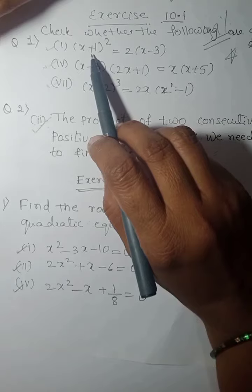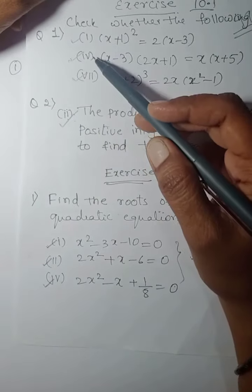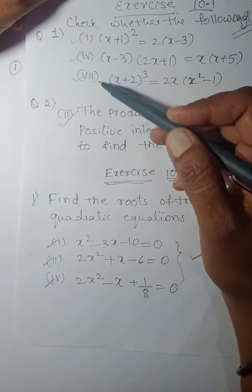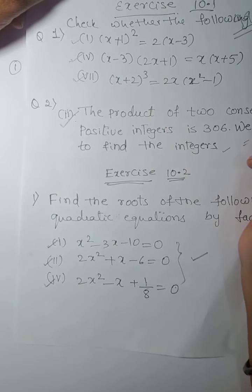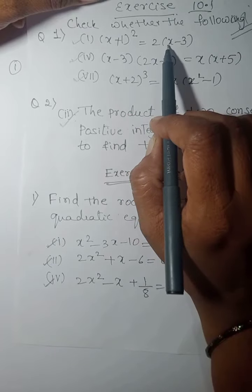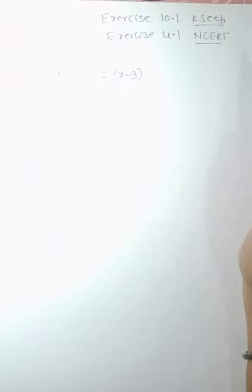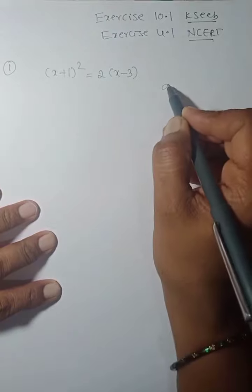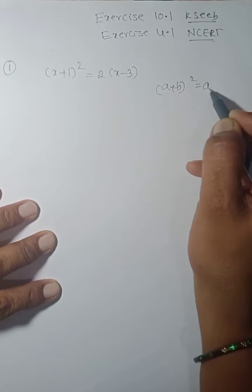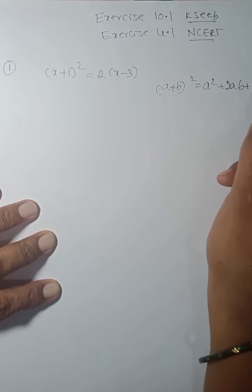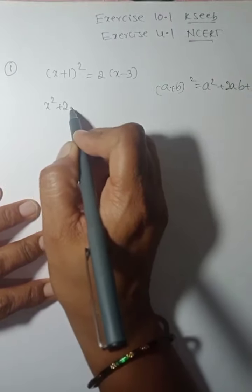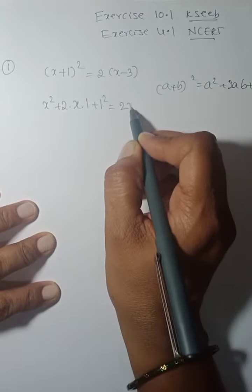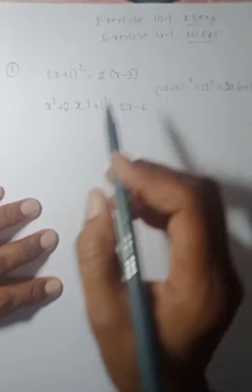I am now solving those three questions and explaining how to check whether they are quadratic or not. The first one is: (x+1)² = 2(x-3). To check this, we use the formula (a+b)² = a² + 2ab + b². So expanding the left side: x² + 2x + 1 = 2x - 6.